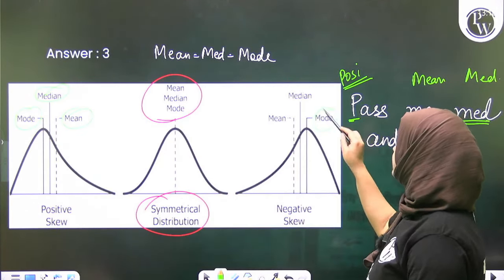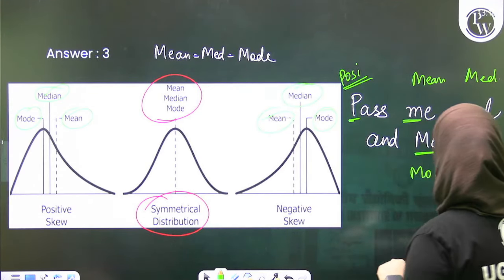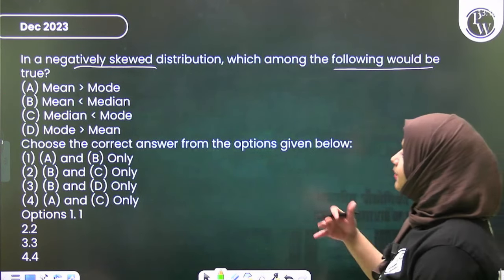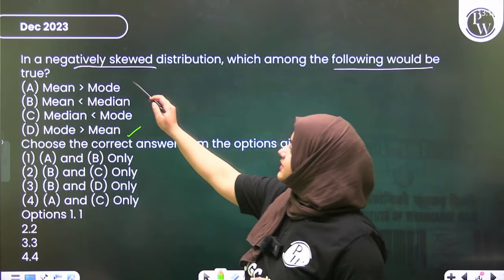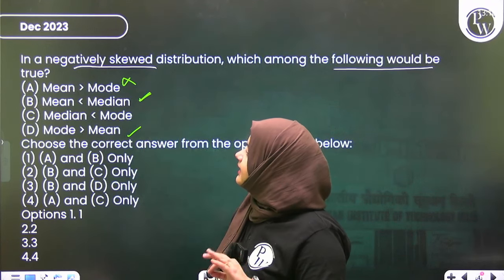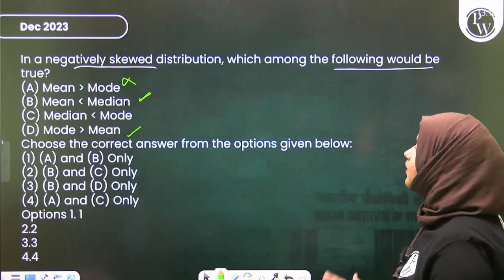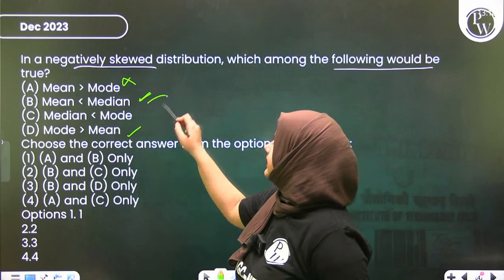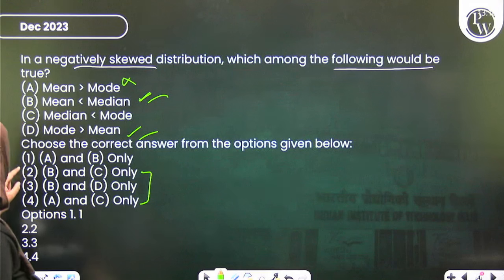In negative skewness, mode is largest, then median, then mean is smallest. So mean is less than median - that's correct. The answer is option number 3, which means B and D only. The correct answer you need to choose is B and D.